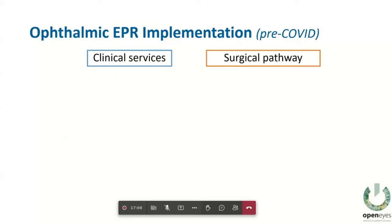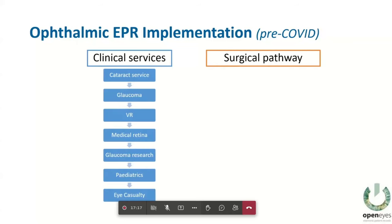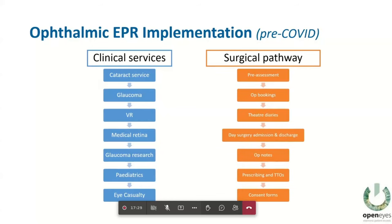In terms of our own implementation: we did it quite slowly over a fairly long time, going one service at a time. We originally started with the cataract service, got that up and running and people used to it, then gradually rolled it out across different departments. Similarly with our surgical pathway, we started with pre-assessments, then operation bookings, then moved all theatre diaries onto it, and eventually replaced all paper consent forms with digital consent forms on OpenEyes.